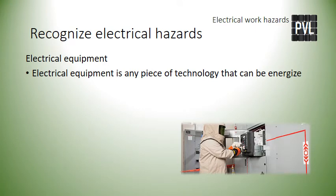Electrical equipment is any piece of technology that can be energized. A light switch, an electrical panel, and a motor are three examples of electrical equipment. Electrical equipment may have an on/off switch, but often does not. Some equipment is hardwired or connected permanently to its power source. Equipment may come on automatically or remotely, so electrical workers must be clear of equipment that may be suddenly energized.